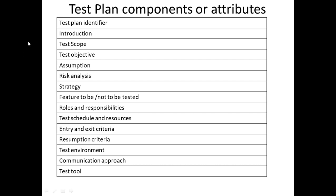These are the different components or attributes which come under the test plan. They may vary according to different organizational structures, but these are the basic components. Entry and exit criteria, roles and responsibilities, and objectives are common points in each and every test plan. According to every organization or the needs of a particular software, there may be variety — components may increase, decrease, or have different names — but these are the basic components of a test plan document.